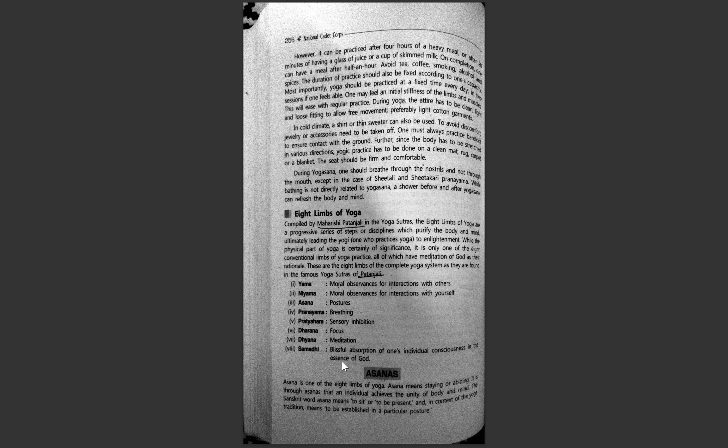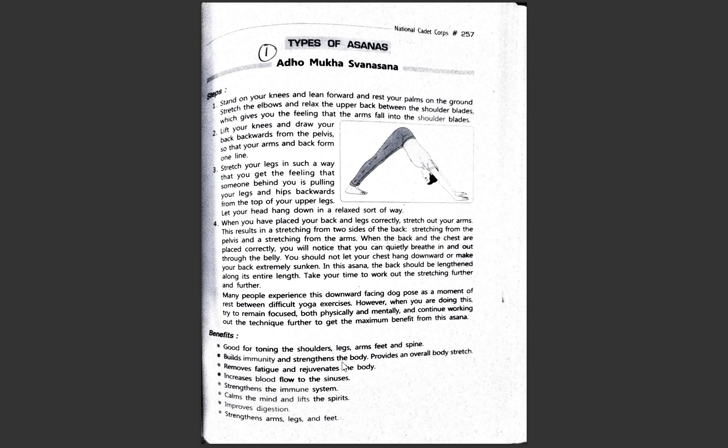Asana is one of the eight limbs of yoga. We will now discuss various types of asanas. I will not be explaining each position but will read out the major benefits for the different types of asanas. There are 31 asanas in total given in this chapter. We will look at their names and their major benefits.